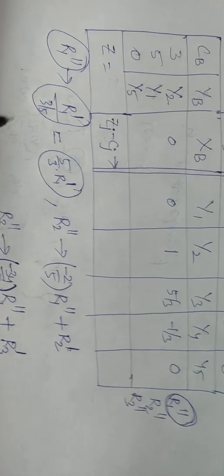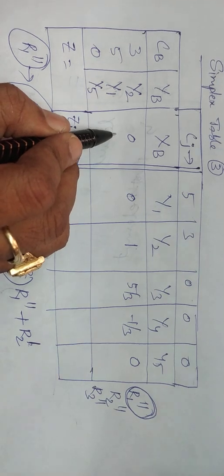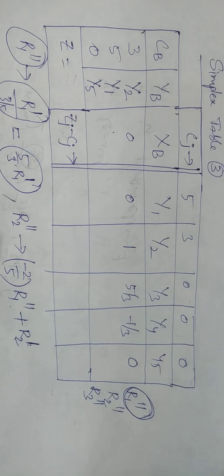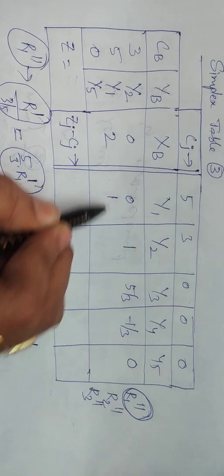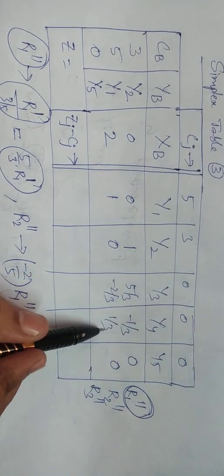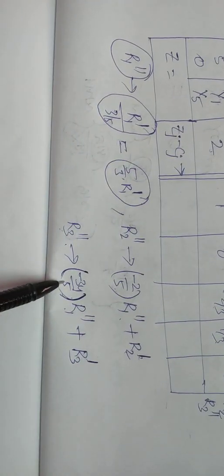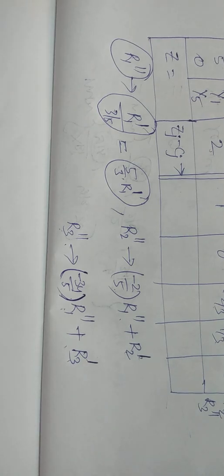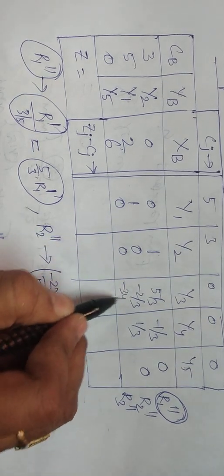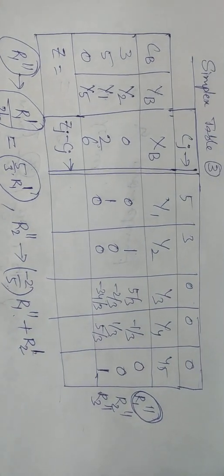After performing the operations, the elements for R2 double dash are: 2, 1, 0, −2/3, 1/3, 0. For R3 double dash: 6, 0, 0, −34/3, 5/3, 1. These complete the entries for Simplex Table 3.